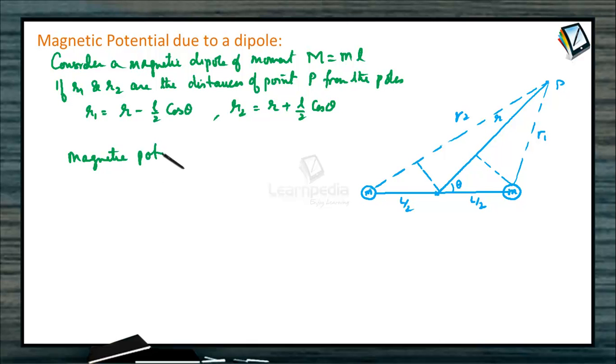Magnetic potential at P: due to this pole, V equals potential due to north pole plus potential due to south pole. If this is north pole and this is south pole, it will be mu naught by 4 pi, M by R1 minus M by R2. Or mu naught M by 4 pi into 1 by R1 minus 1 by R2.